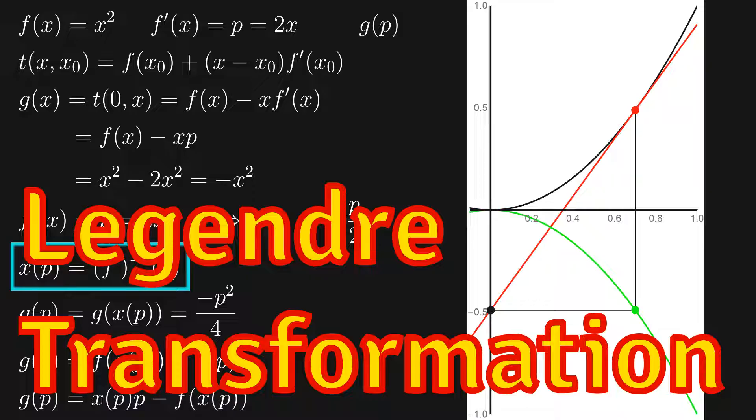I'm going to restrict this to differentiable functions, and although the concept is more general, in physics we're usually dealing with differentiable functions. So, we start with the function f of x. We know the derivative of f with respect to x, and we call it p. We would like to find a new function g of p that contains all the information contained in f of x.